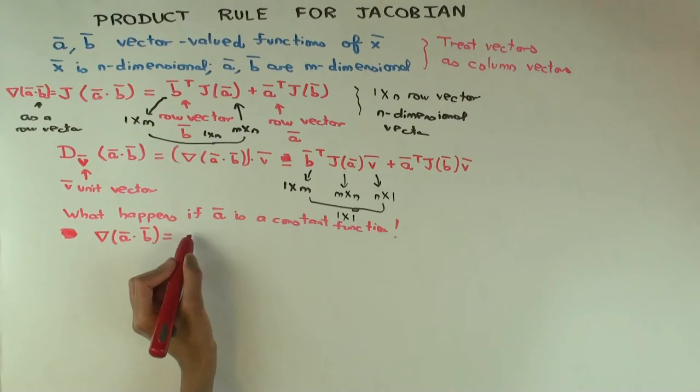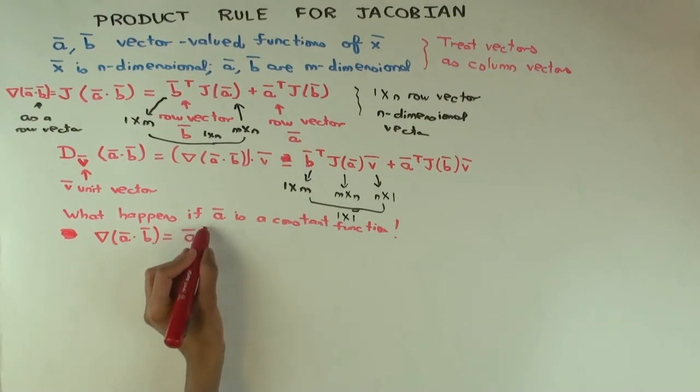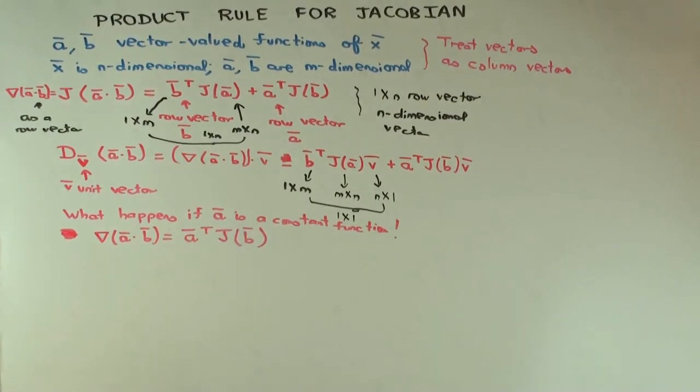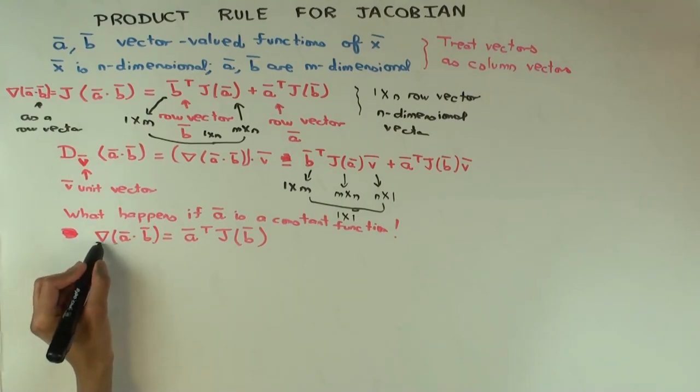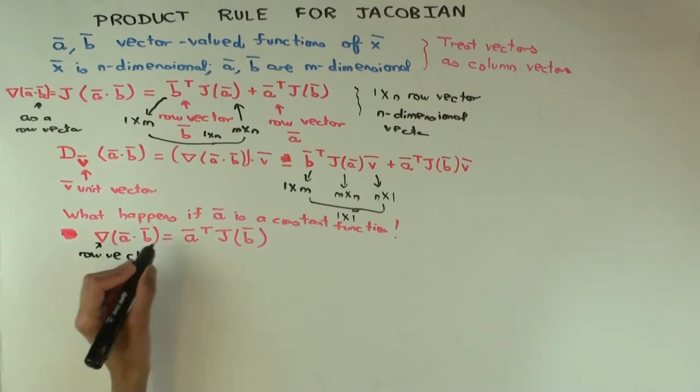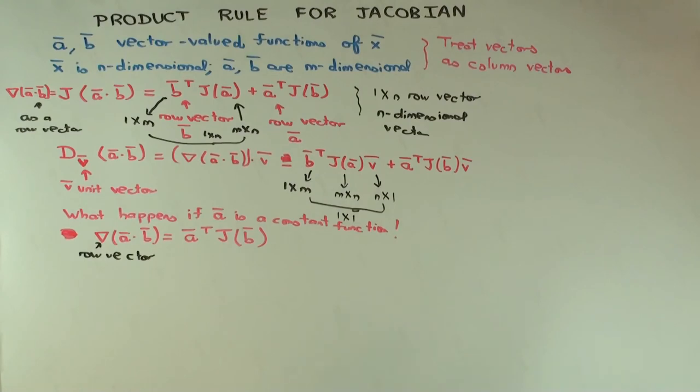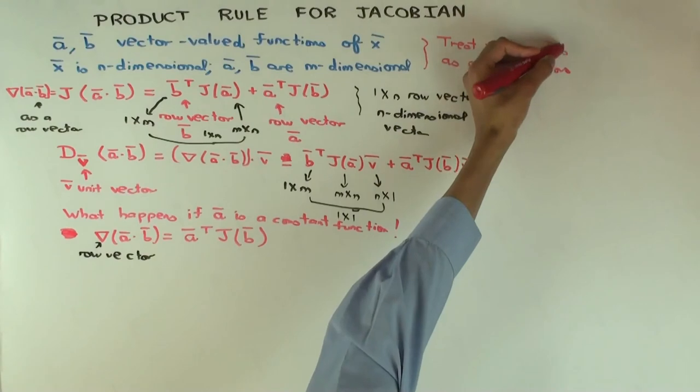So what do you get? a transpose times J_b. By the way, some people follow a different convention for what's a transpose and what's not, whether you write it as row vector or column vector. So you should specify what we are doing. So here I am thinking of the output as a row vector and I think of a as a column vector.